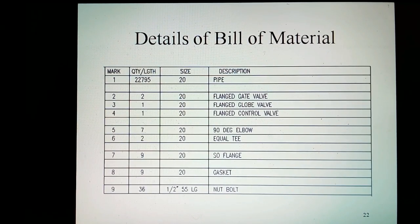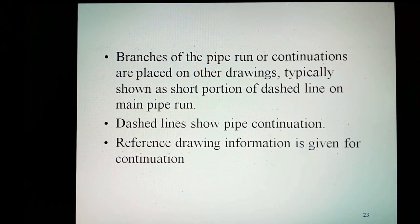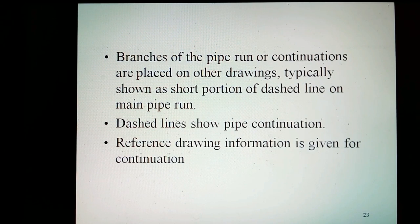Details for bill of material. Branches of the pipeline or continuations are placed on other drawings, typically shown as a short portion of dashed line on the main pipe run. Dashed lines show pipe continuation. Reference drawing information is given for continuation.